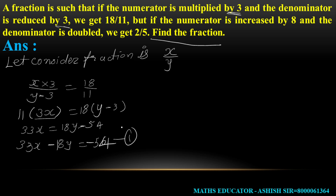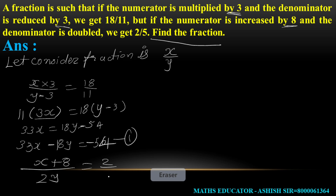Now for the second part: if the numerator is increased by 8, we get x plus 8, and the denominator is doubled, we get 2y. Then we get 2 upon 5.